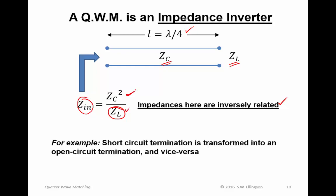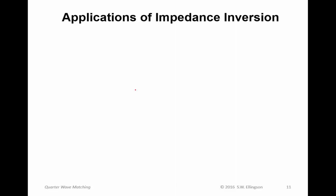So, for example, if Z sub L is a short circuit, then Z sub N will be an open circuit. That's an extreme realization of that fact.